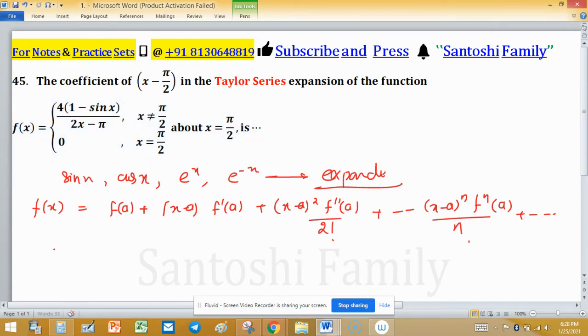Here f(x) equal to 4(1 - sin x) divided by (2x - π).